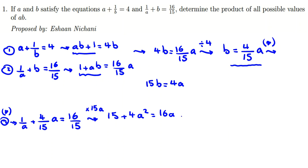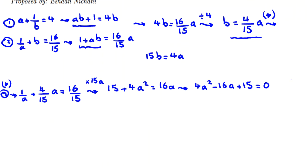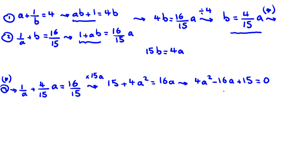Now here you have a quadratic function. You can solve it with the quadratic formula. Take all things to the left hand side: 4a squared minus 16a plus 15 equals zero. The formula is this.